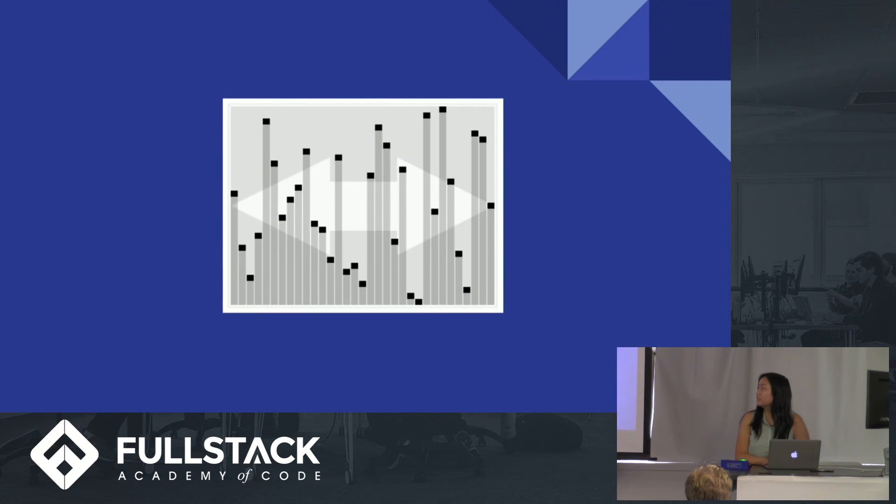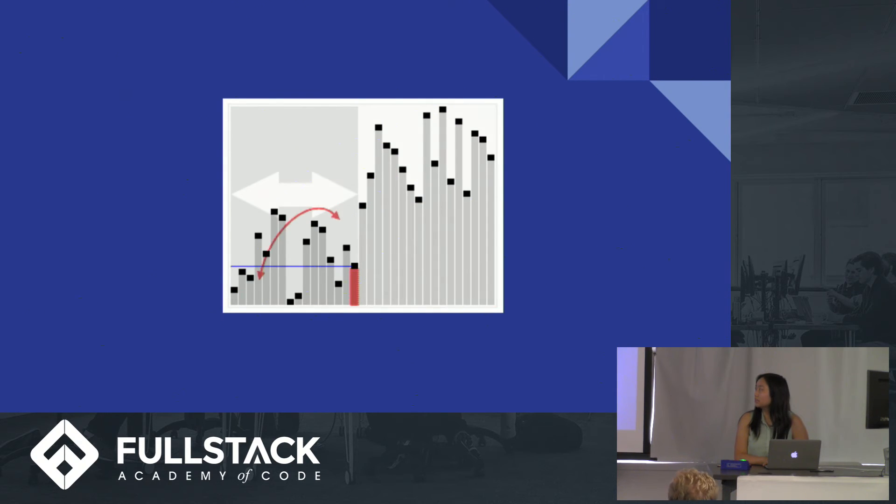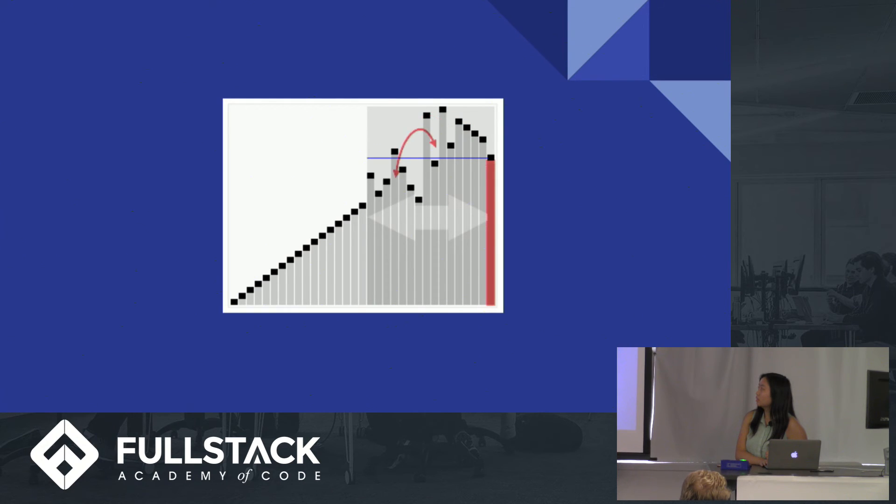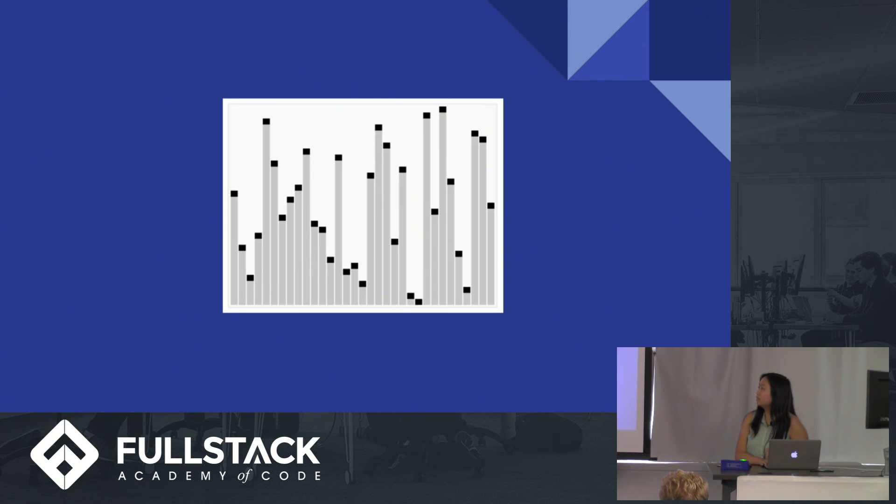So this is a visualization of everything together, of how quicksort works. In this case, they chose the last element to be the pivot and then they swap it with the correct position so the pivot ends up being in the right spot. So as you can see, they move everything to one side. They move everything less than the pivot to the left and then everything greater than the pivot to the right.